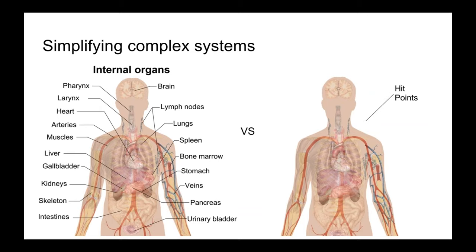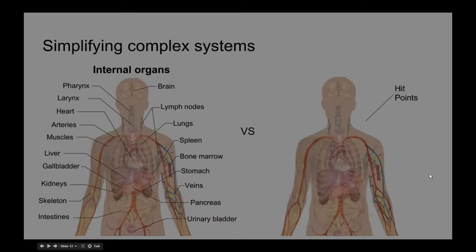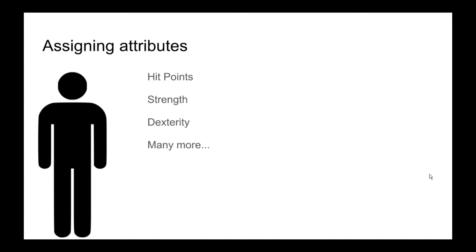We break everything down into the most complicated possible list first, and then decide intelligently for our game how to represent it. We simplify it down to our little character with hit points, strength, and dexterity — a few more detailed out in the Data RPG. For our example, we'll focus on just those three. We want to define what each means: hit points represents health of bones, muscle, blood, and organs; strength represents ability to lift, jump, hold breath, and run; dexterity represents shooting, dancing, throwing, and catching.